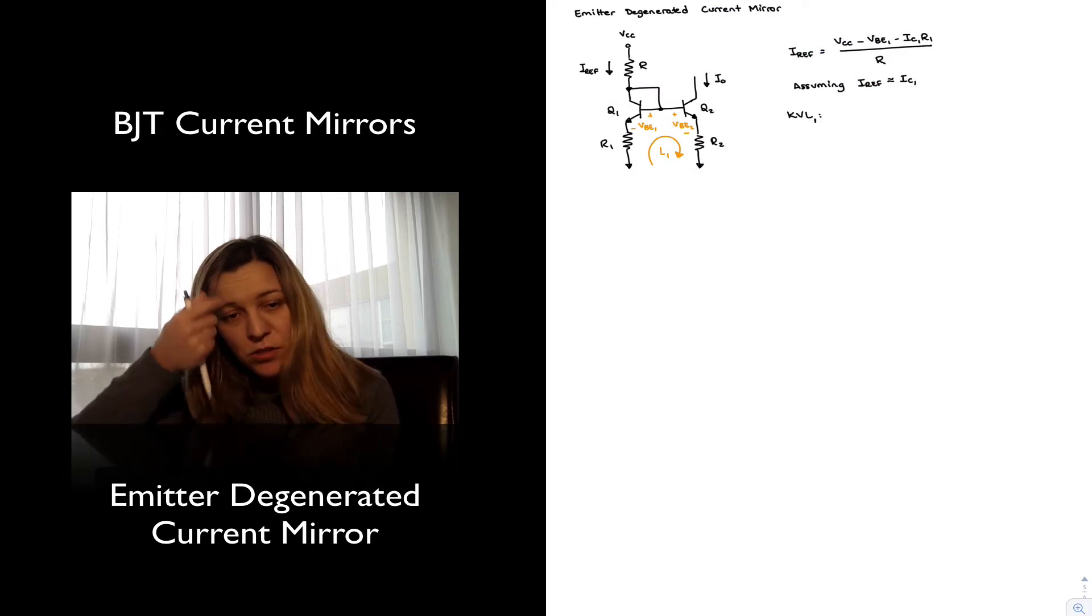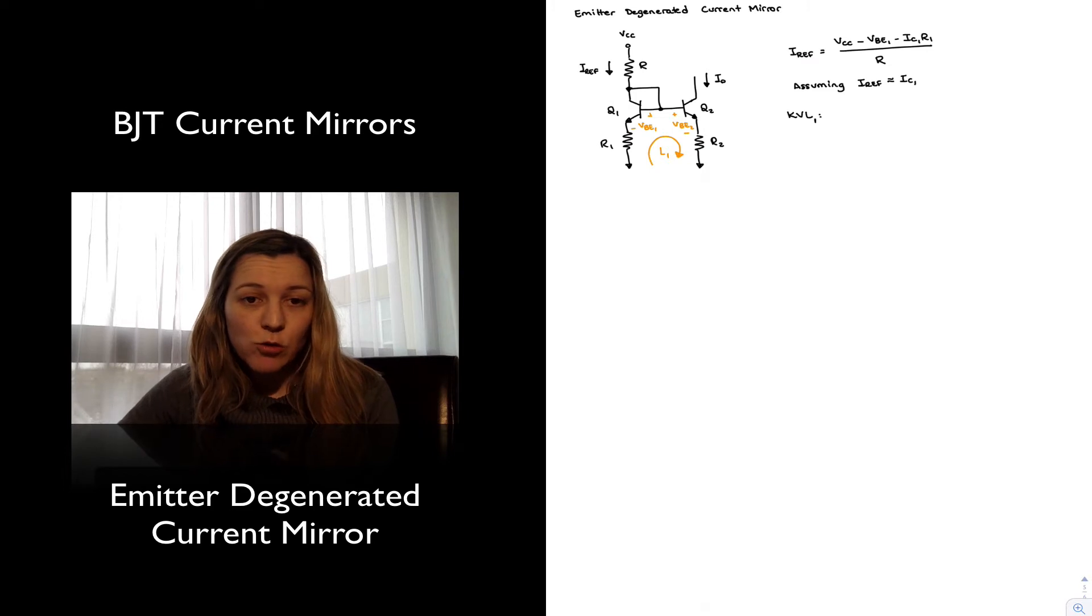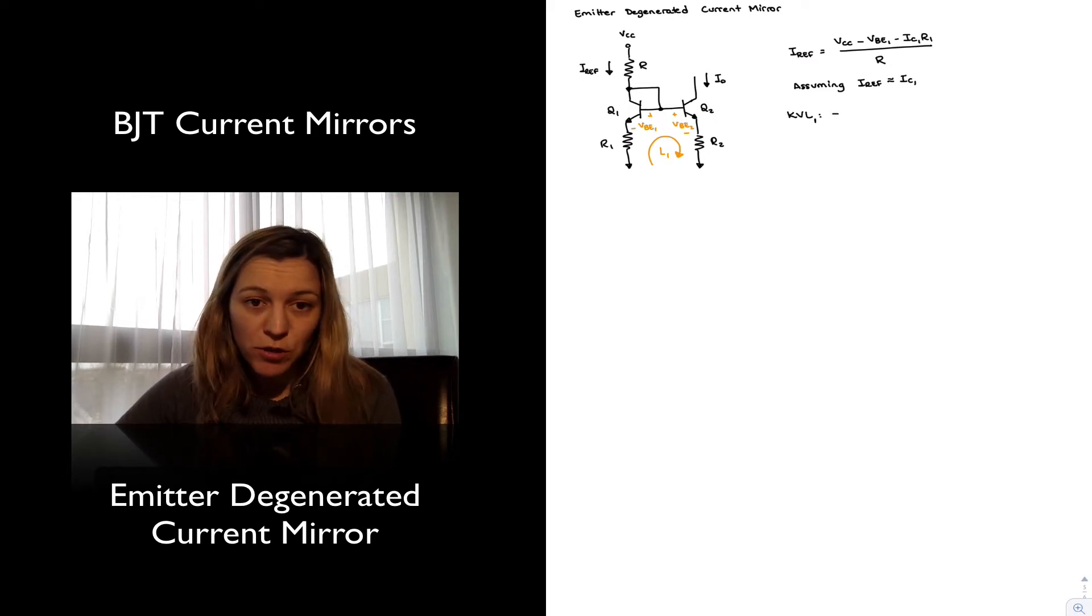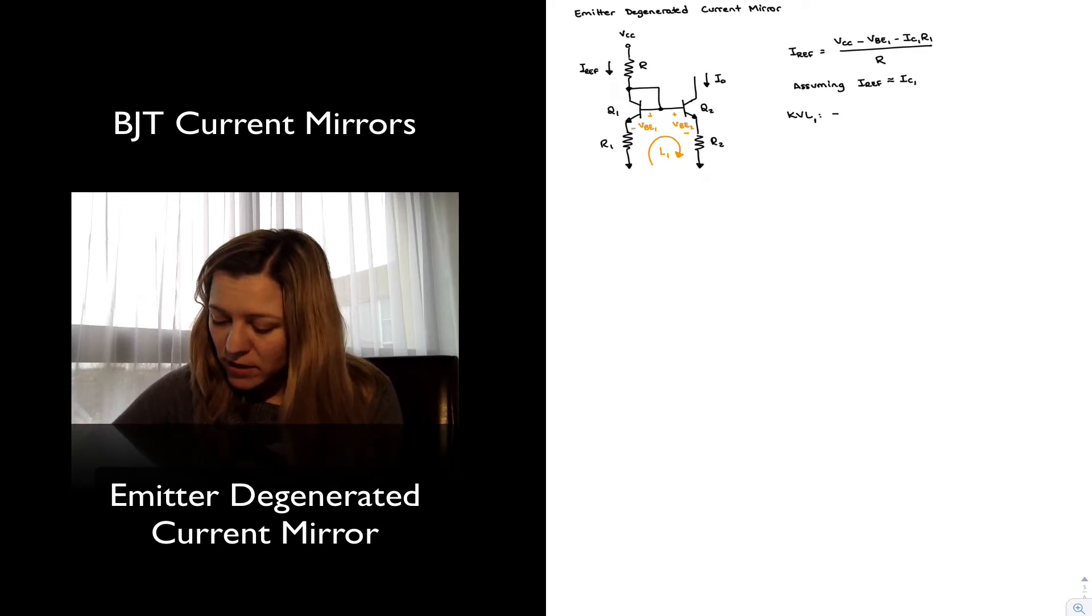Sum of voltage drops is equal to 0 around a closed loop, or sum of voltage rise is equal to sum of voltage drops, however we want to express it. So let's go ahead and calculate the voltage drops. So I'm going to have first the voltage drop across resistor R1, which is a voltage rise, so I'm going to express it as a negative voltage drop, minus IC1 R1, but we just said we're going to approximate IC1 as IREF, so minus IREF R1.